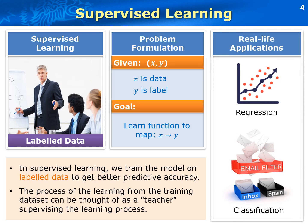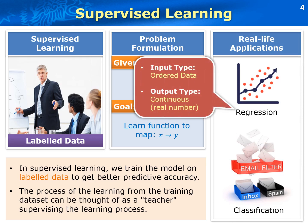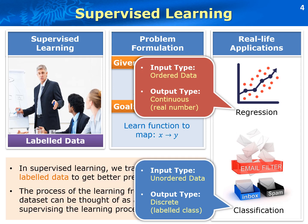The main difference between them is the output type. For regression, the predicted data is ordered, and the output is to distinguish the data into real numbers, which are continuous values, such as house price prediction. For classification, the predicted data is unordered, and the output is to separate the data into several categories, which are discrete class labels, such as email spam classification.